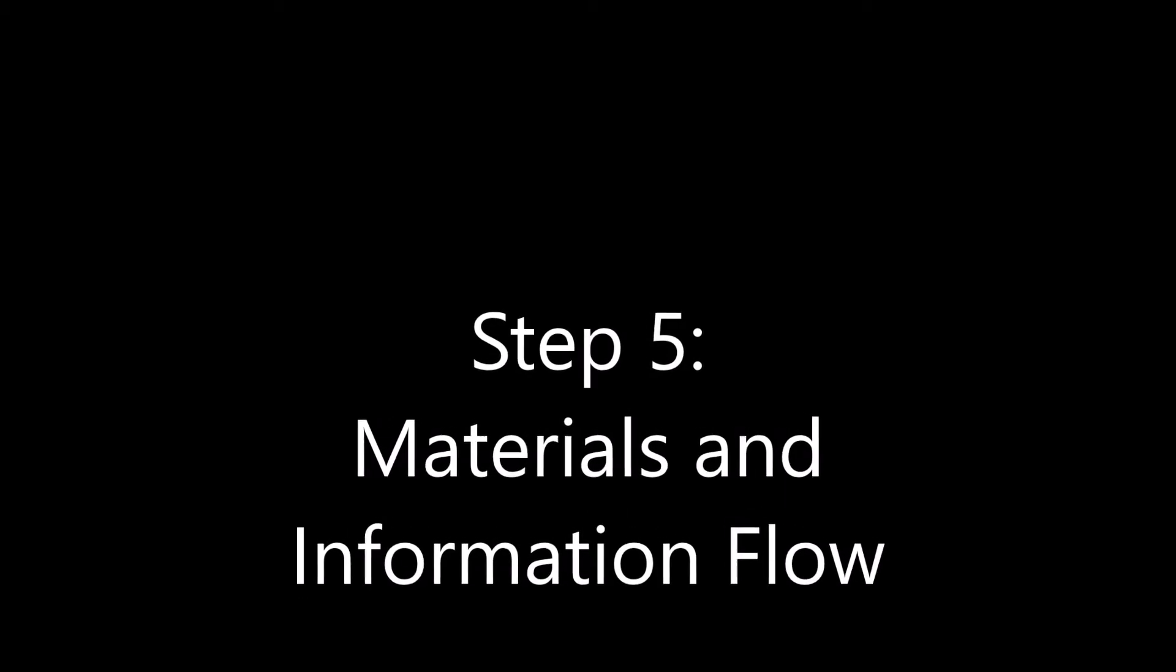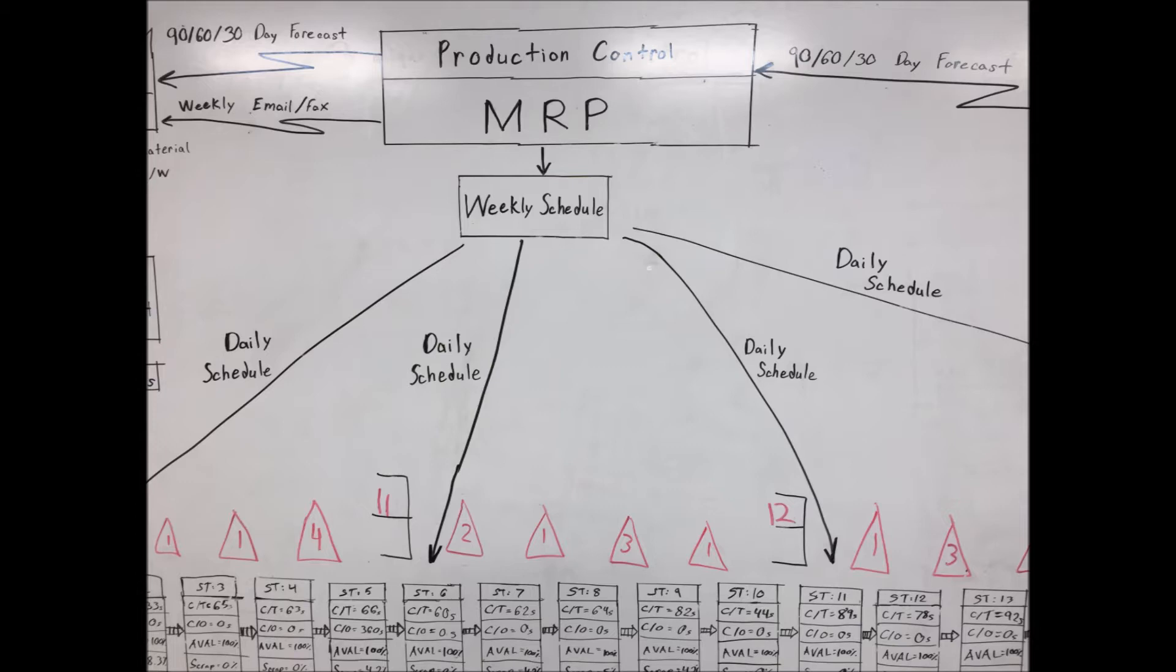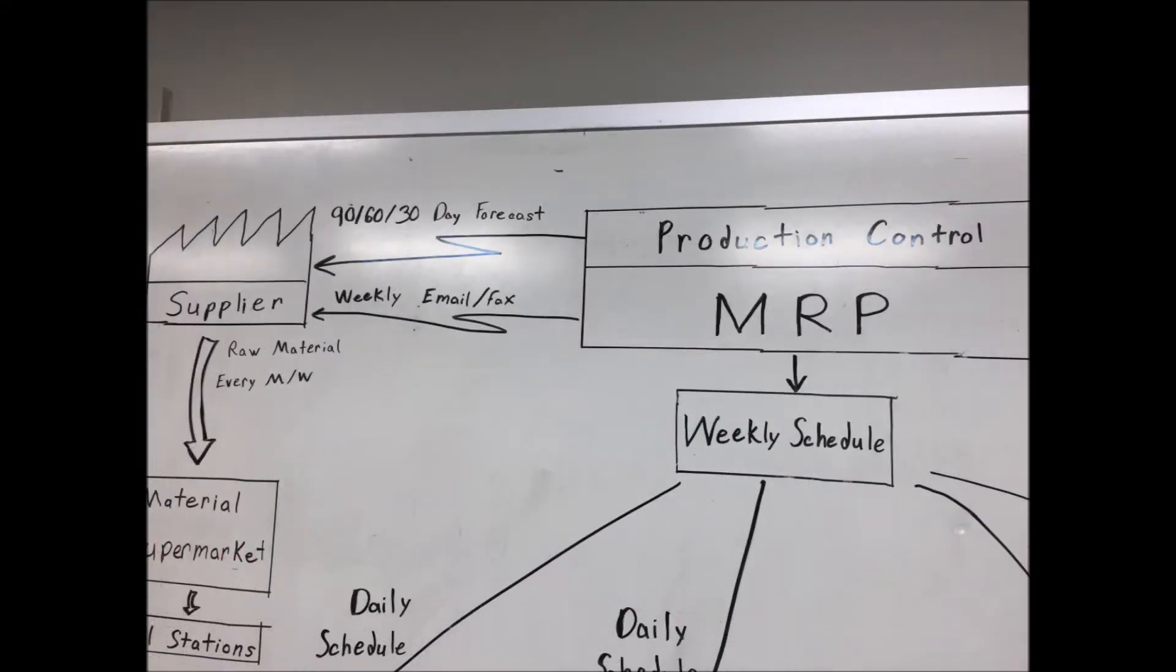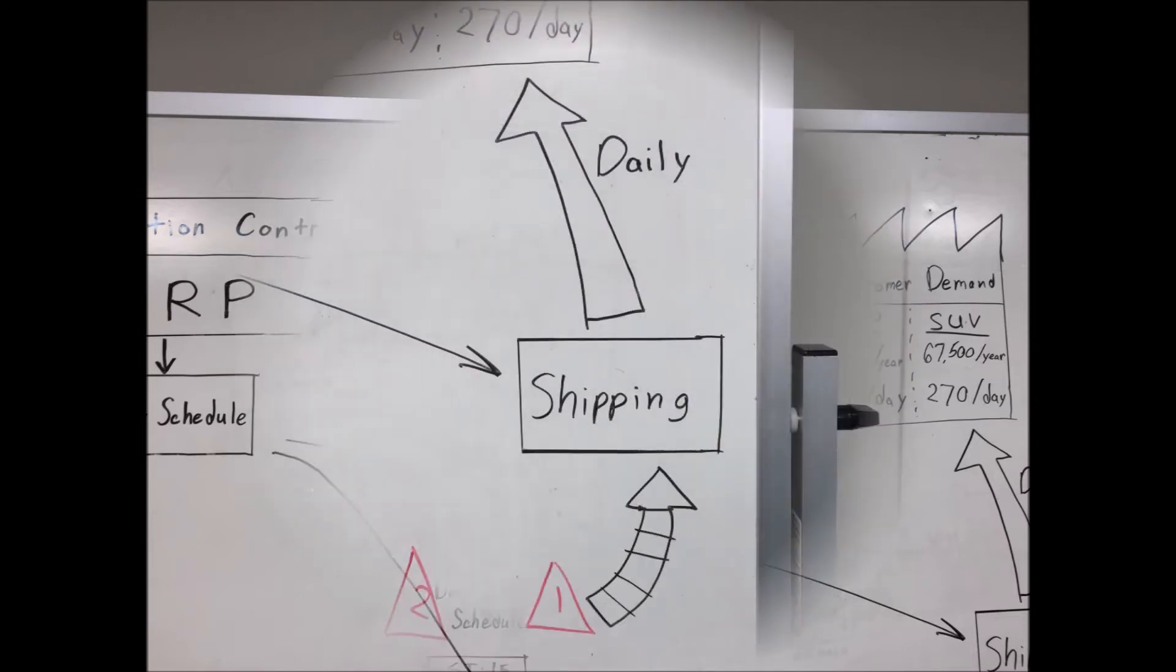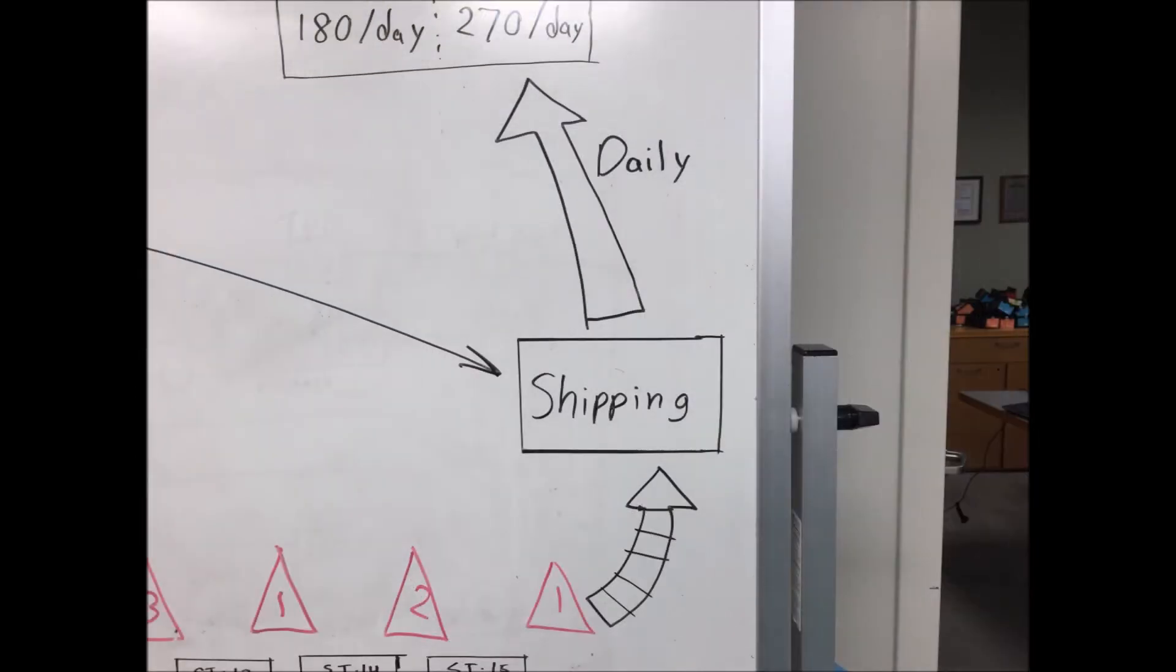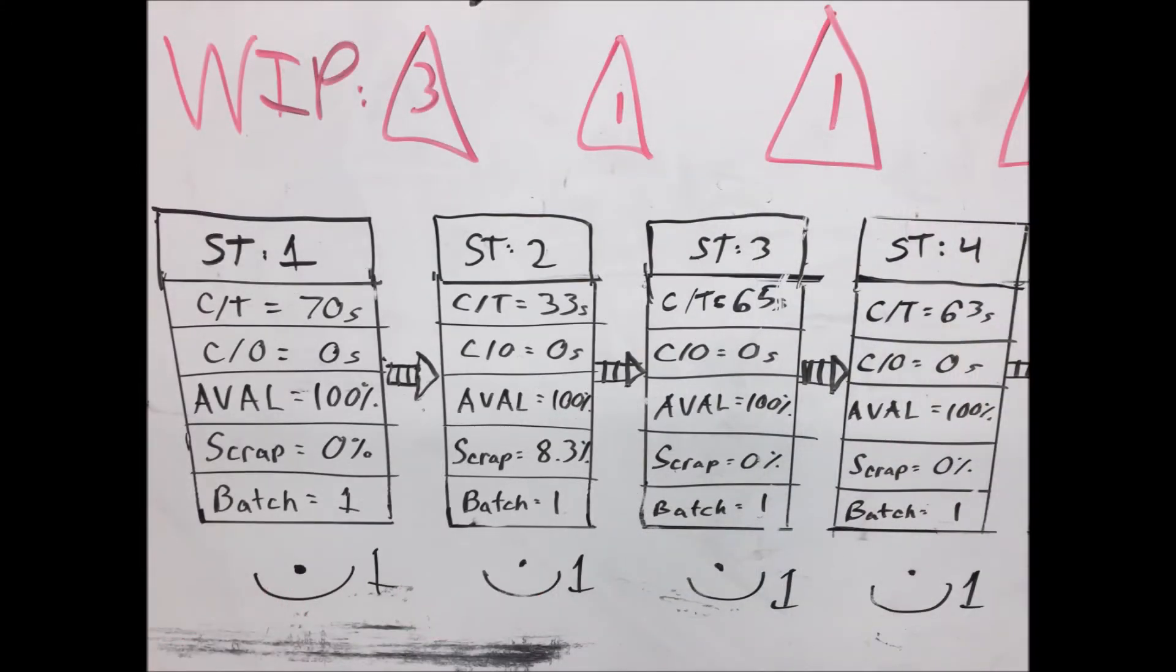Step 5: Materials and Information Flow. Map out all of the materials and information flows. For the LEGO Lab, we used an MRP system to schedule weekly and daily production forecasts. 30-, 60-, and 90-day forecasts are also delivered to the supplier and input into the MRP system based on marketing forecasts. We also draw striped arrows between all stations to demonstrate push.